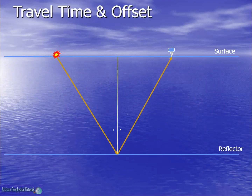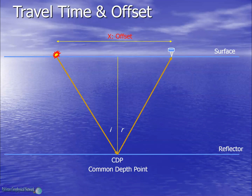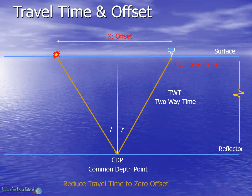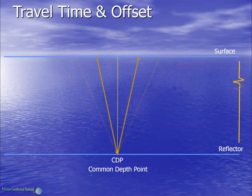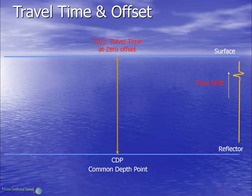Let's consider a ray path from the source to the receiver reflected from a depth point. X is the source-receiver offset and Tx is the two-way time as shown by the event in the trace. In NMO correction, our aim is to reduce the slant time to vertical time by reducing the source-receiver offset to zero. As the offset decreases, the two-way time also decreases and the reflected event in the trace is shifted up.